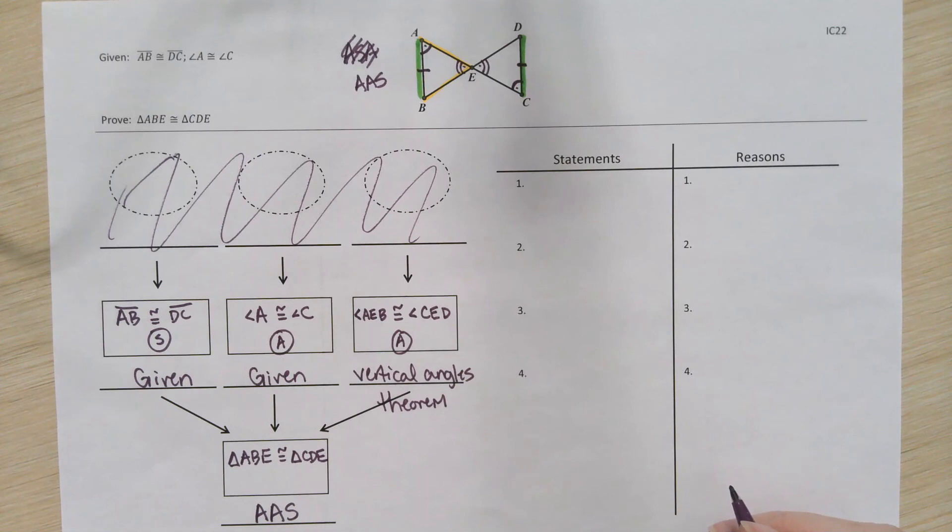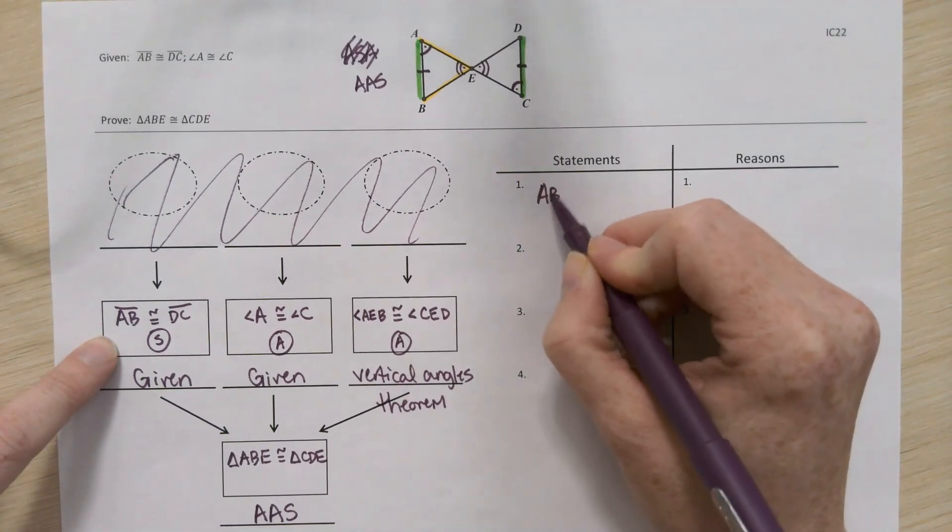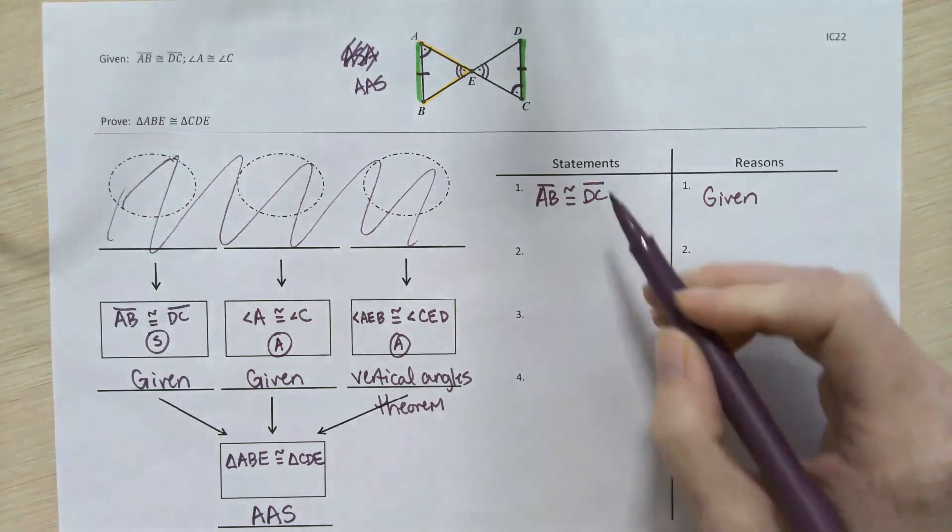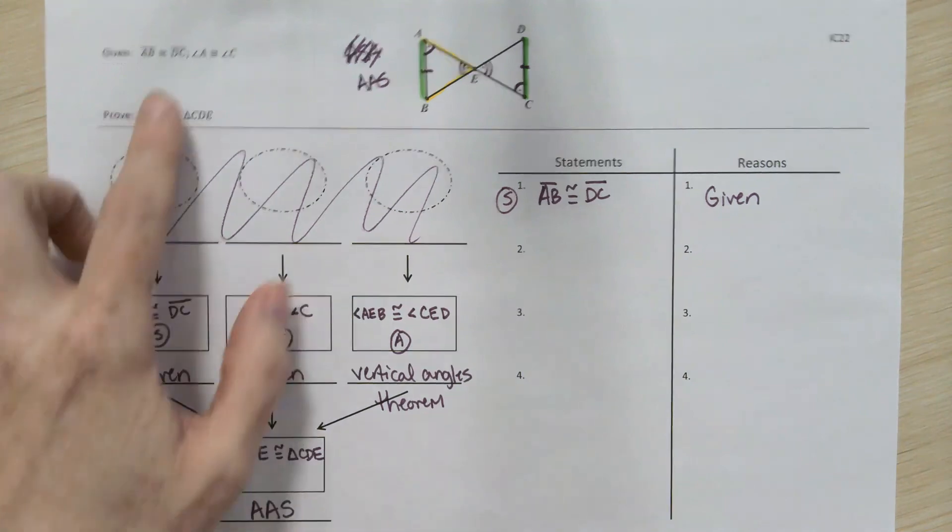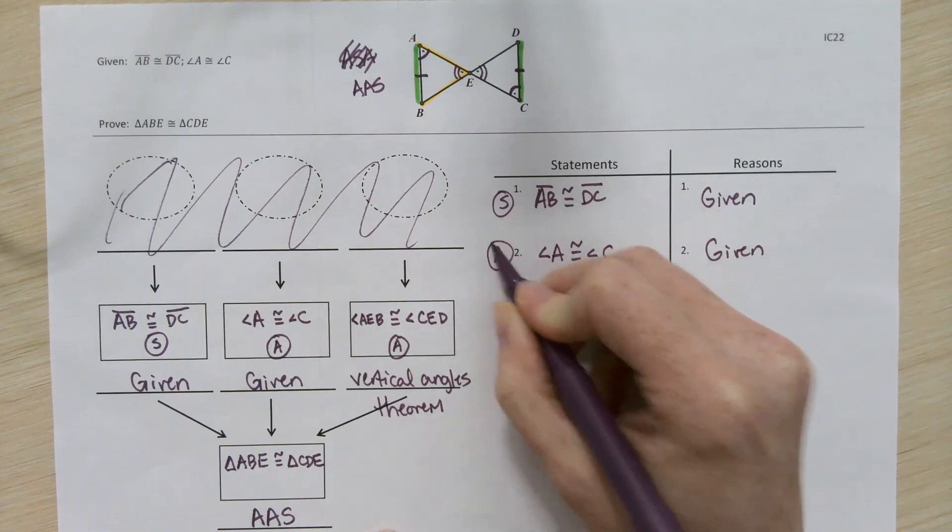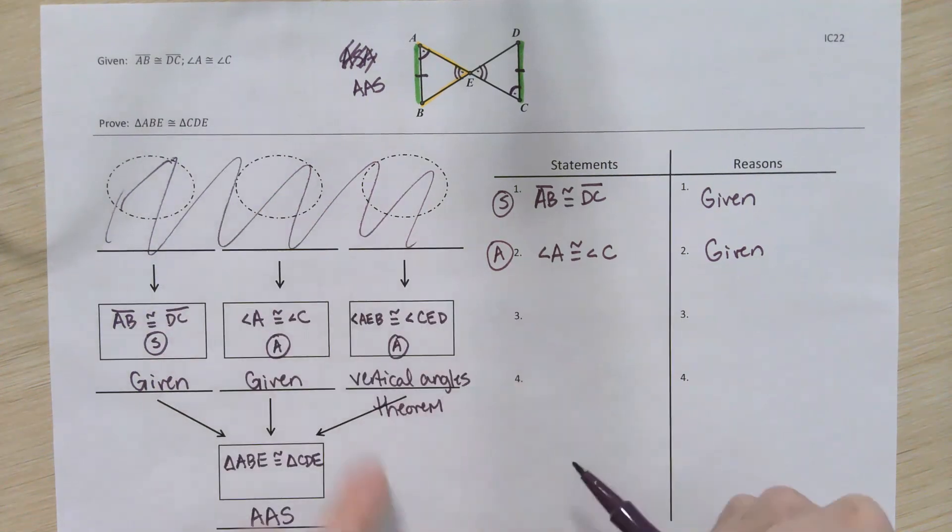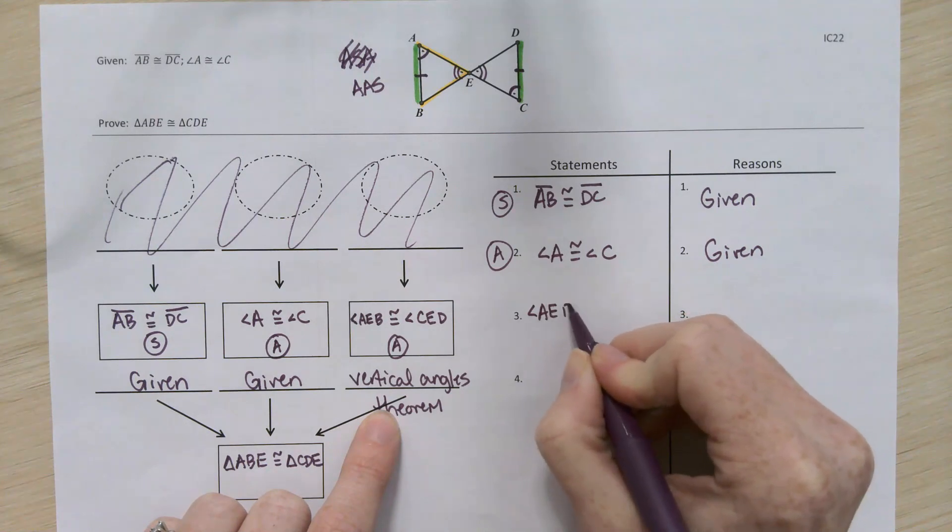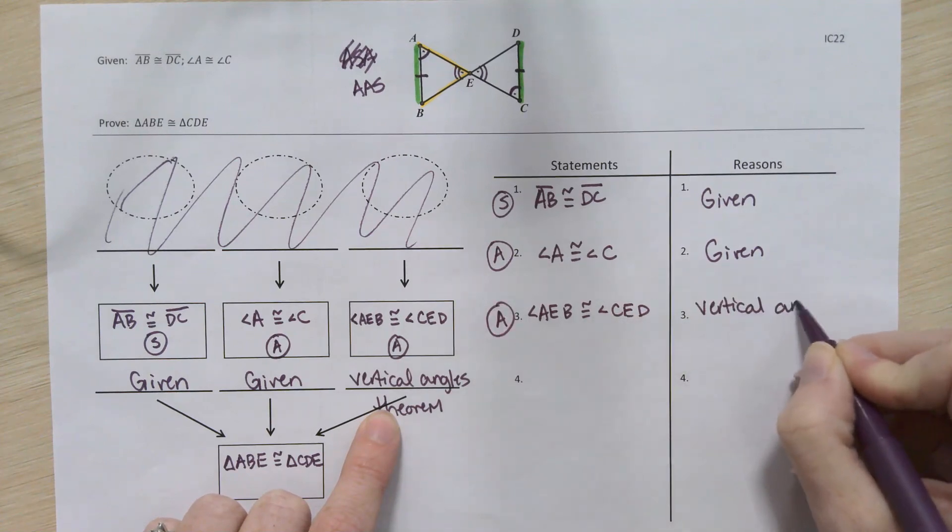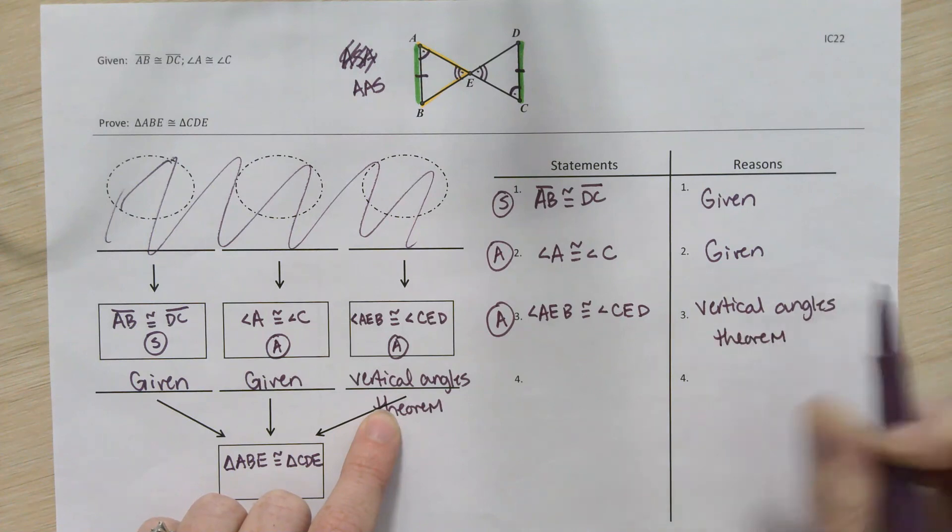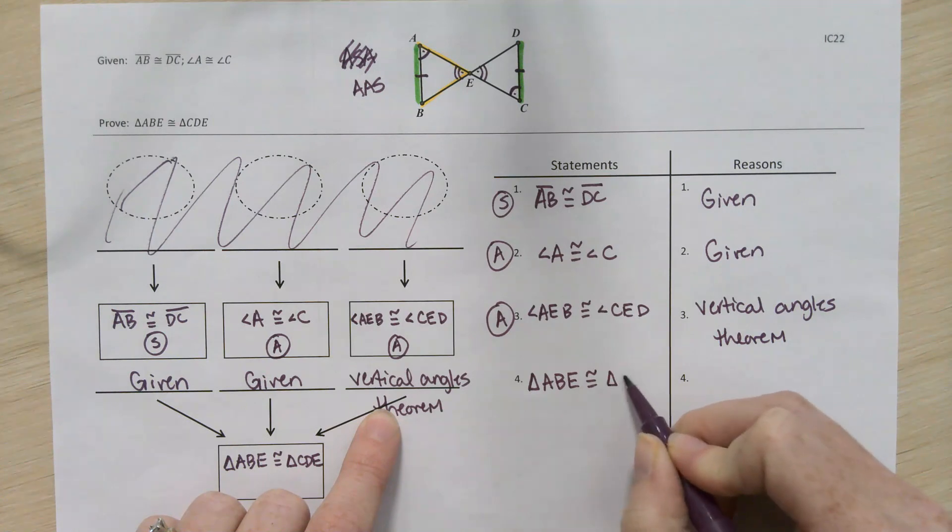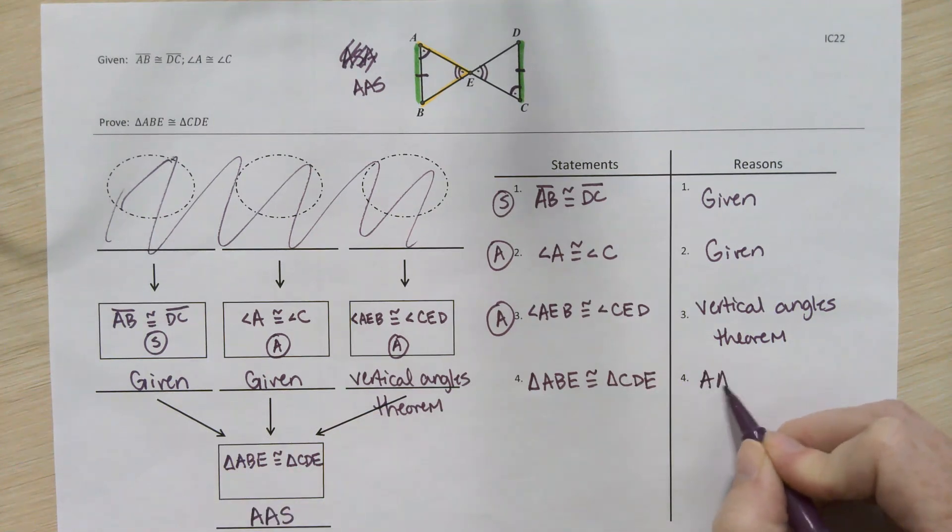Alright, let's turn it into a two column proof. We've got a statement here about segment AB being congruent to segment DC. That was from our given. That doesn't lead us to another pair of segments or angles directly, so we can just move right on to our next given. Angle A is congruent to angle C. I'm going to mark that out here with an A. I'm done with my given information, so my last piece of information I need before I'm able to say that those triangles are congruent is the vertical angles that we marked. So, there's another pair of angles by vertical angles theorem. And then when I have those three pairs of congruent parts lined up, I'm ready to say triangle ABE is congruent to triangle CDE by angle angle side.